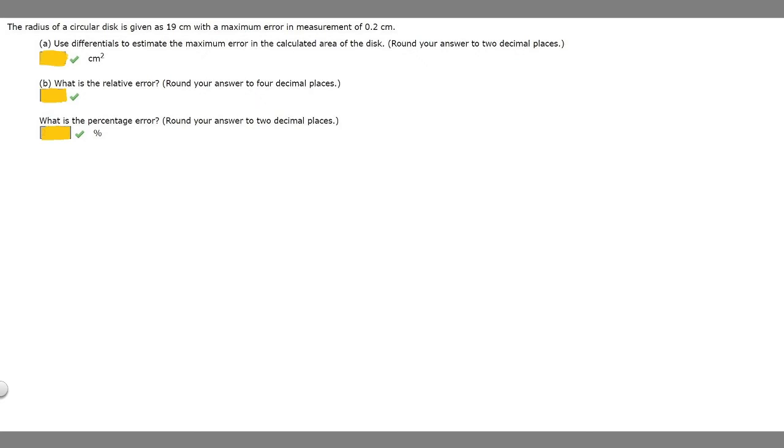Round your answer to two decimal places. First, we need to figure out the formula for the area of a disc. It's basically just the area of a circle, which is equal to πr².